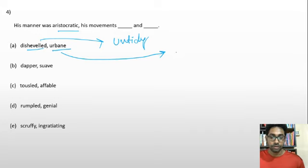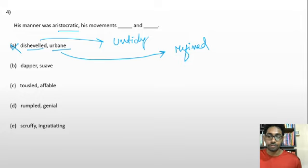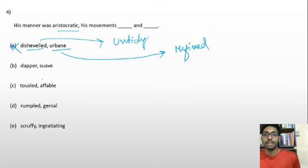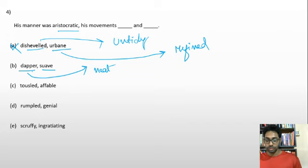Option B: dapper and urbane. Dapper means neat, tidy, and nicely dressed. Urbane means refined and sophisticated. 'His manner was aristocratic, his movements dapper and urbane' — all three words carry similar positive, refined connotations. This fits perfectly. Option B is a strong candidate.